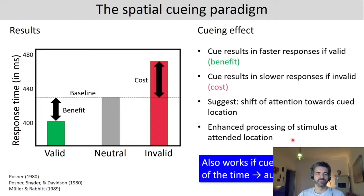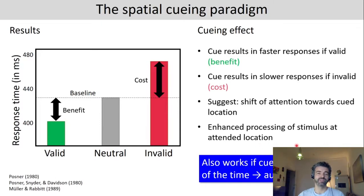Interestingly, this also works if the cue is invalid most of the time, suggesting it's an automatic effect. Participants are not willingly shifting their attention to the cue — it happens automatically. If they could willfully shift attention, they would stop doing so once they knew the cue would invalidly indicate the target location most of the time.